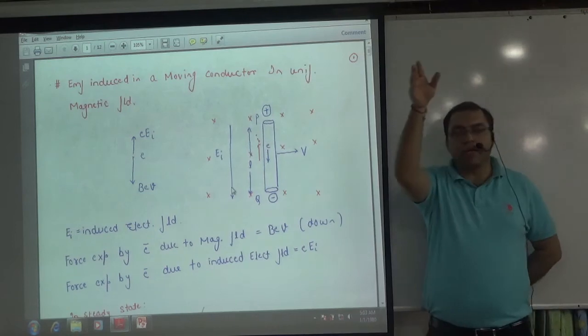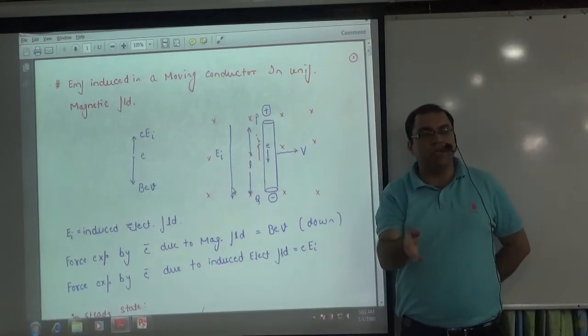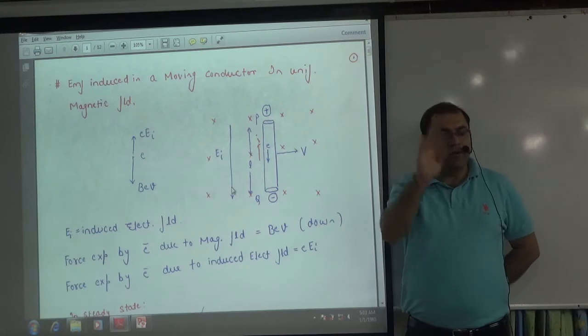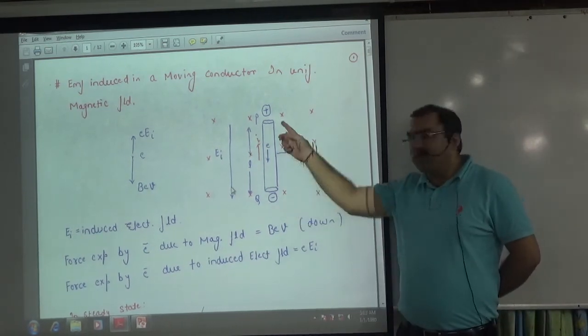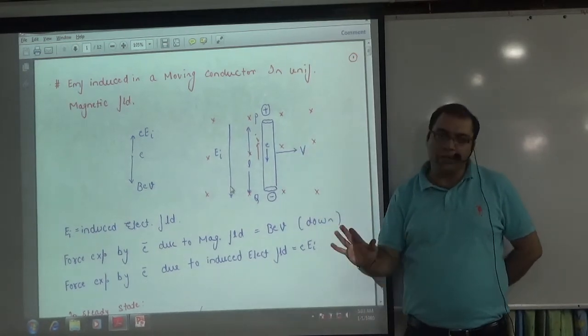Because if electron goes down, the induced current is in the opposite direction. Shortcut: induced current is always from negative to positive. The first rule is clear.